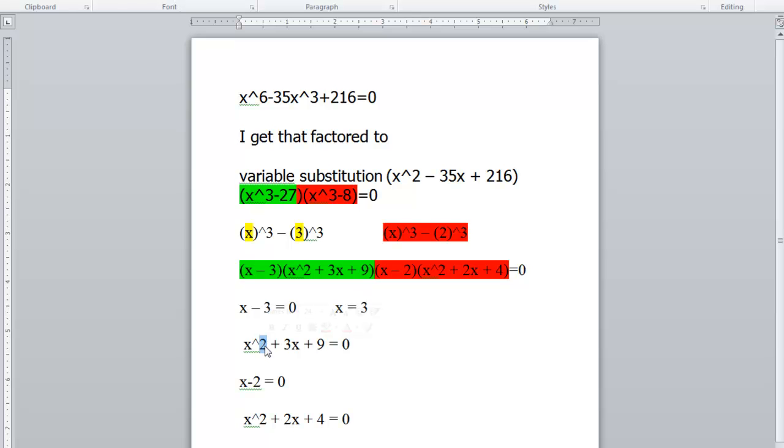This one is quadratic, and you can't factor it. So what two numbers can you multiply together to get 9, add together to get 3? You can't. So use the quadratic formula on this piece.